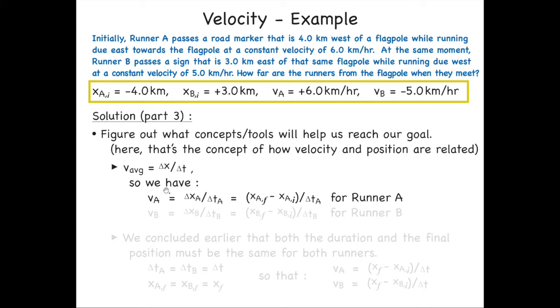So if we write these down specifically for the two runners, then the velocity for runner A must equal the change in position for runner A divided by how long that runner is running. This expands out to be the final position of A minus the initial position of A, which is by definition delta x for A, divided by how long runner A was running for. We can do the same thing for runner B. The velocity for B is the change in runner B's position divided by how long runner B is running. Expand out the delta xB as xB final minus xB initial.